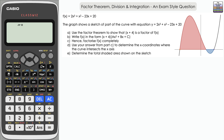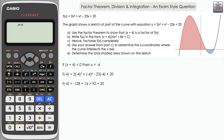If x+4 equals zero, that means x equals negative 4. If we substitute negative 4 into f(x) we should get zero. To show the working, first write it with brackets showing the substitution of negative 4 into the function. The next line simplifies all individual terms: negative 128 plus 16 plus 92 plus 20. You can use your calculator to total those up and confirm they equal zero.